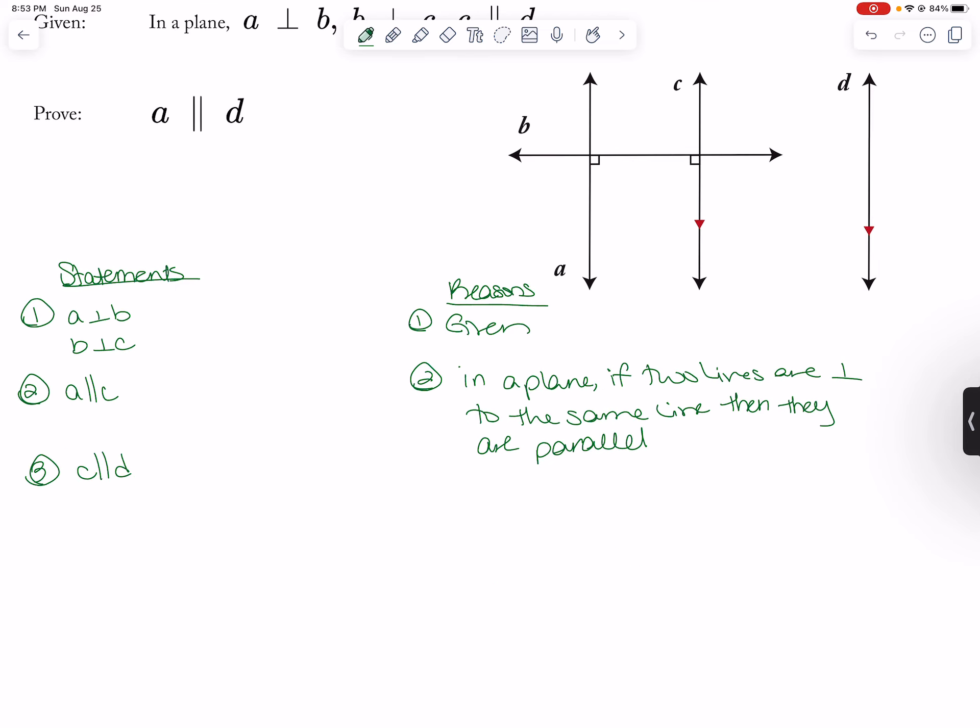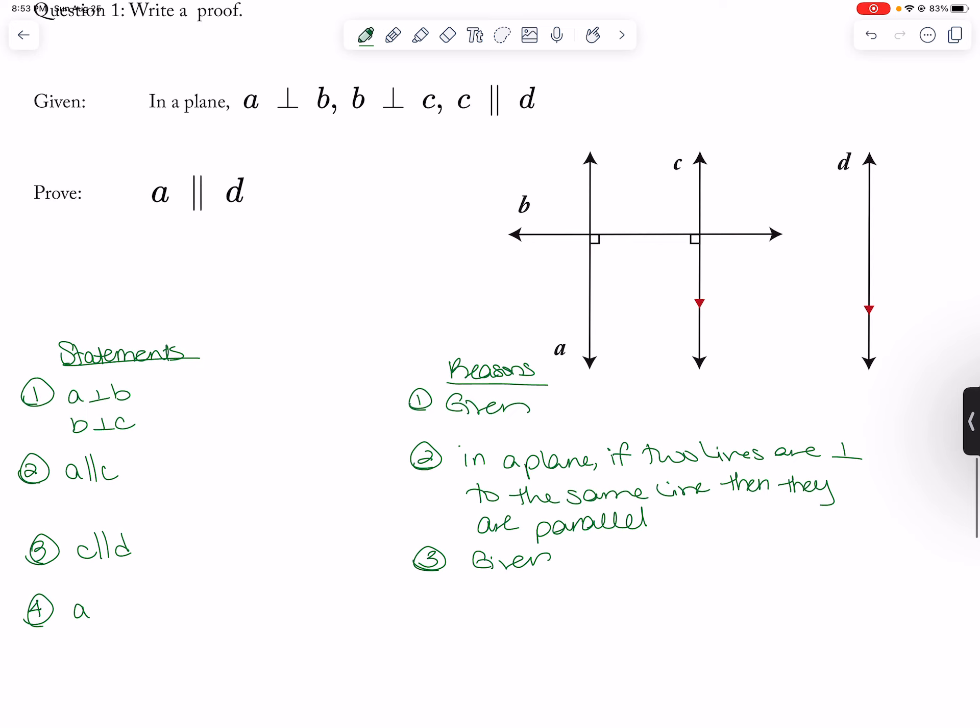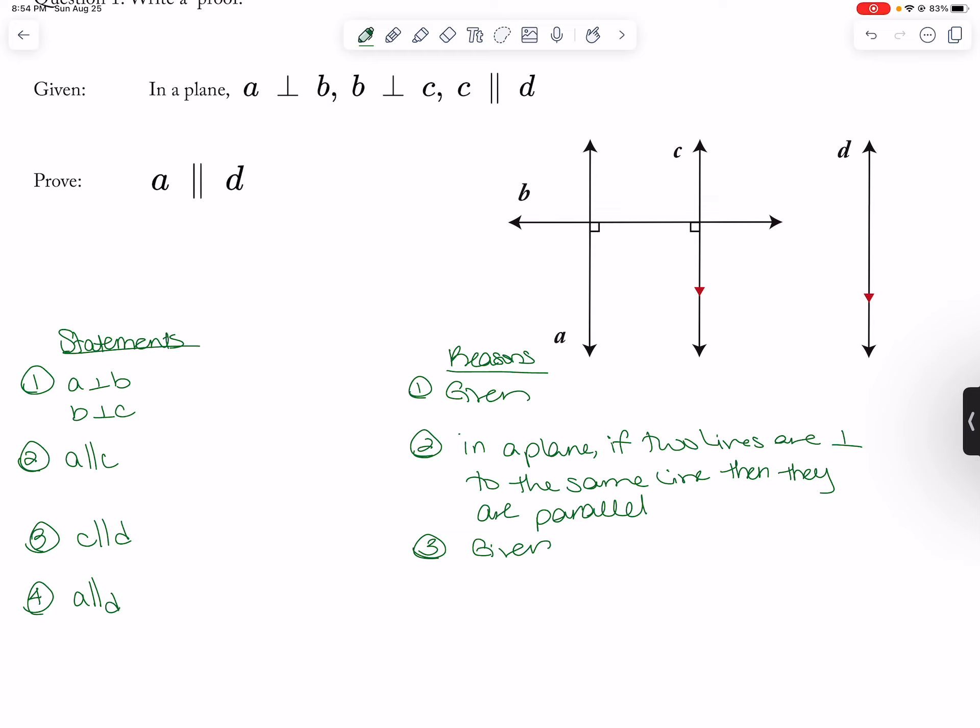C is parallel to D and that is given. So we can say that A is parallel to D because, let's see, A is parallel to C because these are perpendicular to each other. A is parallel to D because if two lines are parallel to the same line, then they are parallel.